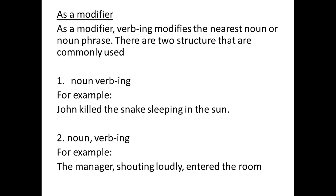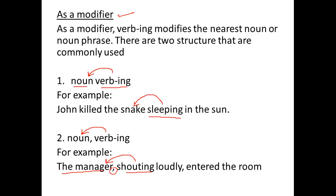The second usage of verb-ing is as a modifier. As a modifier, it modifies the nearest noun. There are two structures possible. One: noun followed by verb-ing — verb-ing will modify that noun. Or: noun, comma, verb-ing — verb-ing will again modify that noun. For example: 'John killed the snake sleeping in the sun.' Here, 'sleeping in the sun' is modifying the nearest noun, the snake. Second structure: 'The manager, shouting loudly, entered the room.' Here, 'shouting' is again modifying the nearest noun, the manager. So in both cases, verb-ing modifies the nearest noun.